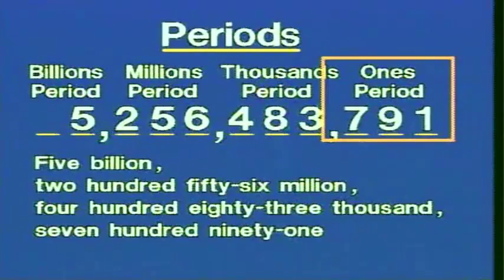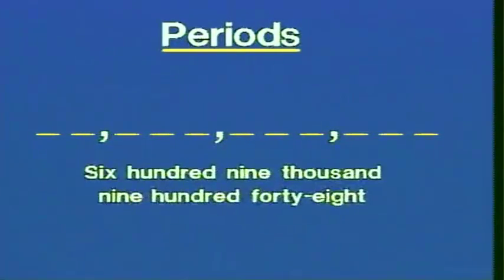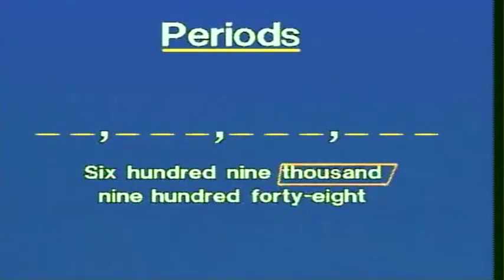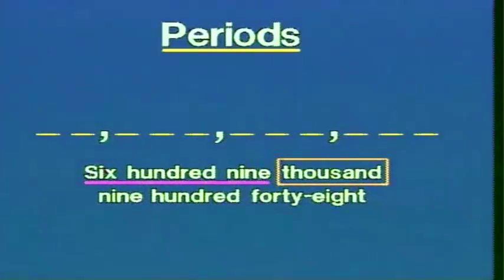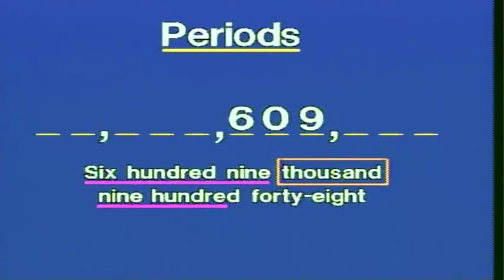The idea of periods and period names can also be used to write a number that's given in words. For example, we have 609,948. There is no comma in the problem — no matter. We identify the highest period in use, which is the thousands period. The digits in that thousands period correspond to the number preceding the period name: 609. Then we proceed to the number in the next period: 948. So we write 609,948.